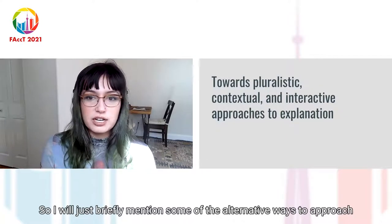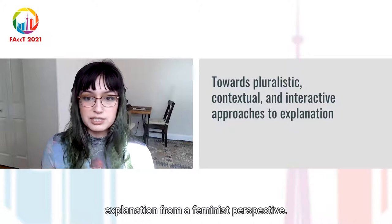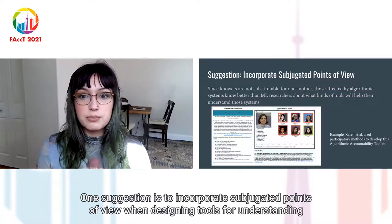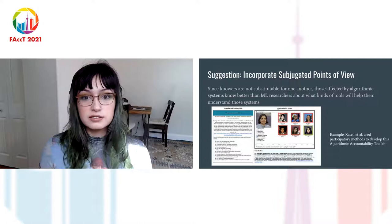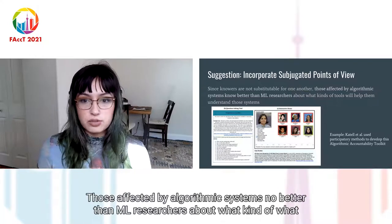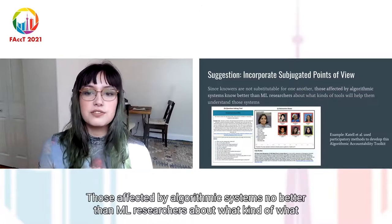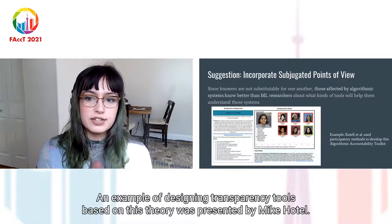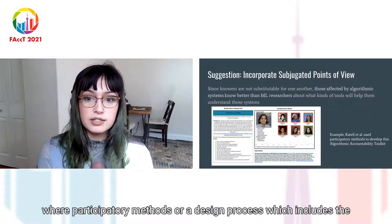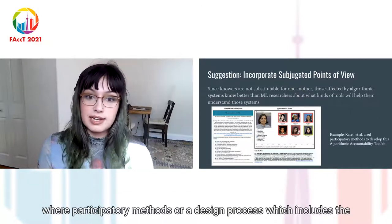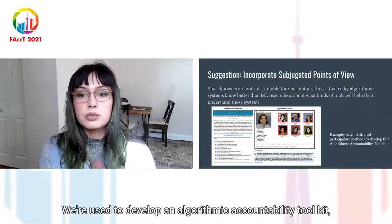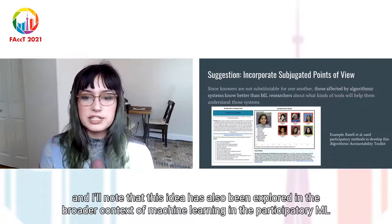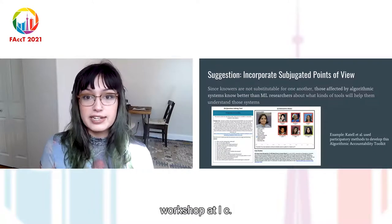I'll briefly mention some alternative ways to approach explanation from a feminist perspective. One suggestion is to incorporate subjugated points of view when designing tools for understanding systems. Since knowers are not interchangeable, those affected by algorithmic systems know better than ML researchers about what kinds of tools will help them understand those systems. An example was presented by Mike Cattell at FAccT last year, where participatory methods — a design process which includes the participation of a certain community — were used to develop an algorithmic accountability toolkit. This idea has also been explored in the participatory ML workshop at ICML last year.